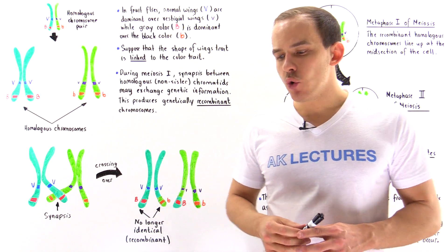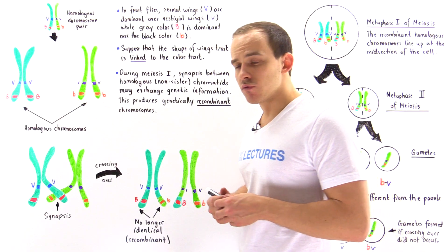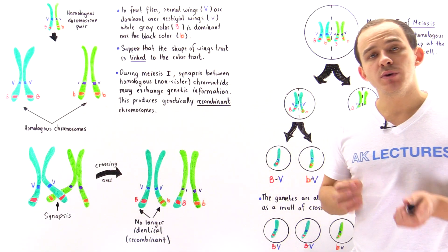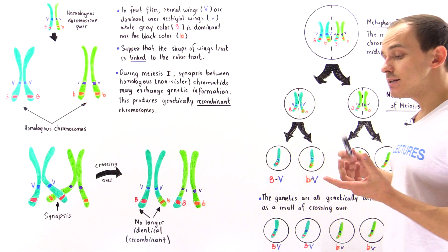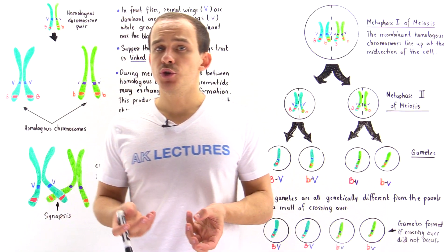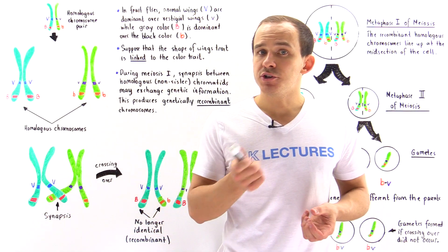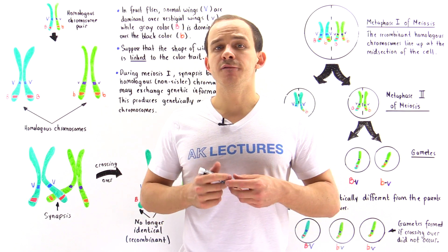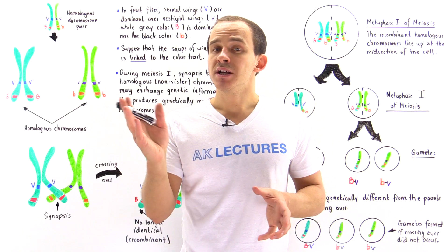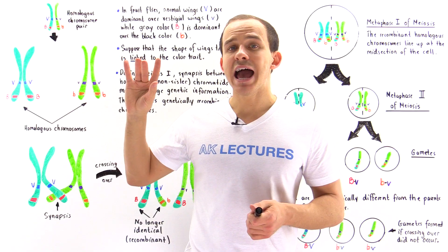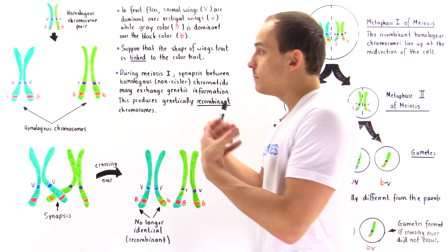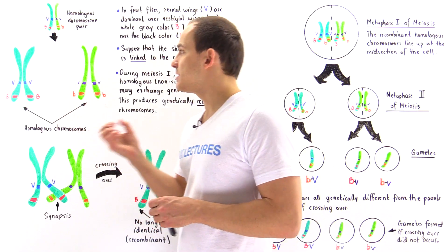In humans, as well as many other diploid organisms, a process known as crossing over can take place. Crossing over takes place during meiosis, and that means crossing over occurs when we form gametes — sex cells. The importance of crossing over is that it allows us to produce gametes that carry genetic information that is slightly different than genetic information found inside our somatic cells. That's exactly why I don't look exactly like either of my parents and why I have my own set of unique fingerprints.